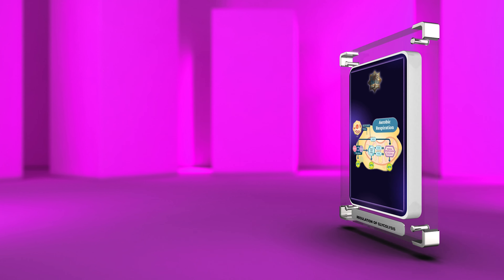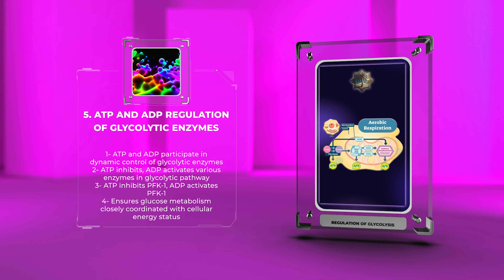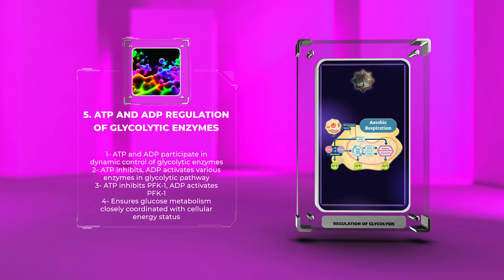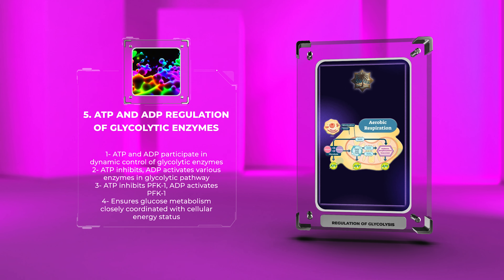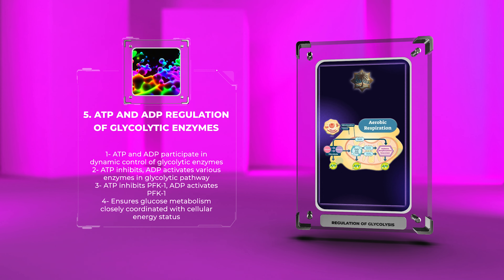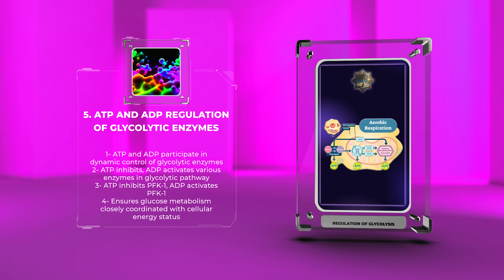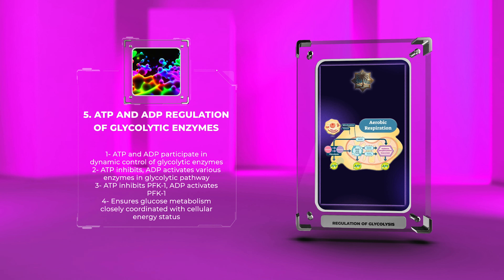Aside from allosteric regulation, ATP and ADP also participate in the dynamic control of glycolytic enzymes. ATP acts as an inhibitor, while ADP acts as an activator for various enzymes in the glycolytic pathway. For example, ATP inhibits PFK1, slowing down the glycolytic flux when energy levels are high. On the contrary, ADP activates PFK1, promoting glycolysis under conditions of low energy availability. This intricate interplay between ATP and ADP ensures that glucose metabolism is closely coordinated with cellular energy status.